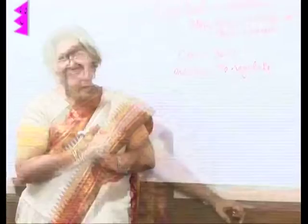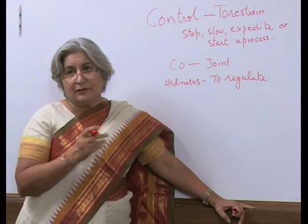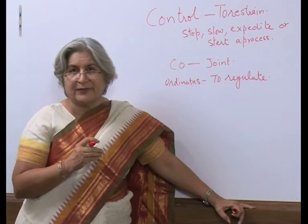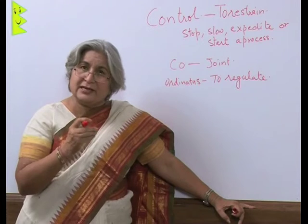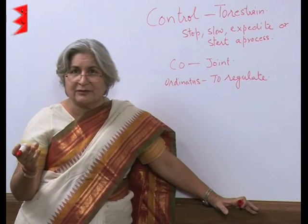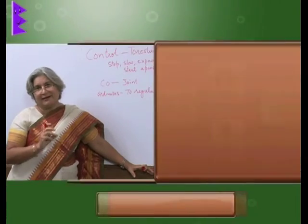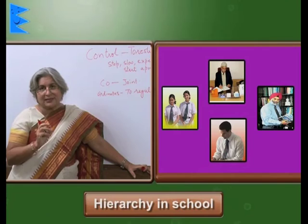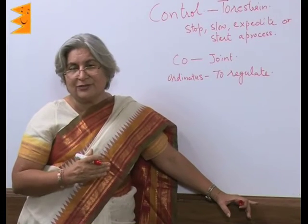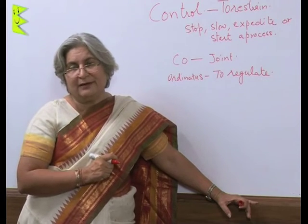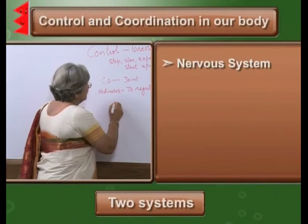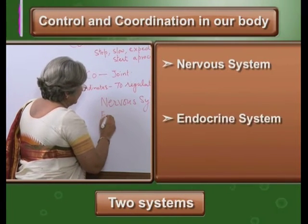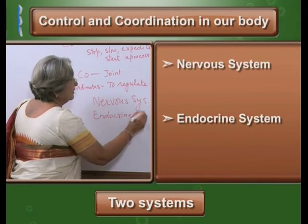Let us take the example of school. School doesn't mean only studies — there is morning assembly, house activities, inter-school competitions. How does everything happen at the right time without creating chaos? There is a hierarchy: a principal, vice principal, teachers, house masters, and class teachers. All of this helps to regulate. In our body also, there are two systems which help in controlling and coordinating.